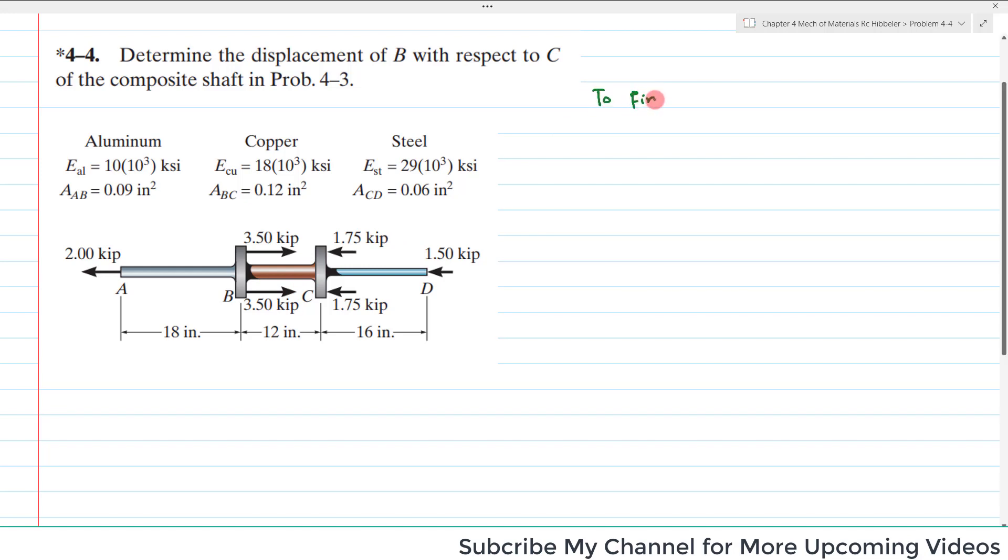You have to find the displacement of B with respect to C, so del B/C. For finding displacement, we have the formula: displacement equals P times L divided by A times E. We do not know P for the portion BC, so therefore we will have to cut it at this section.